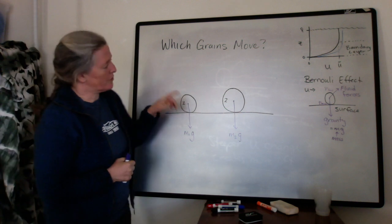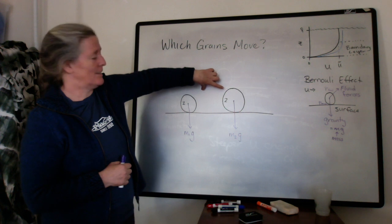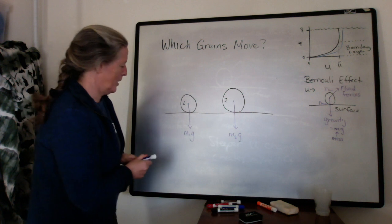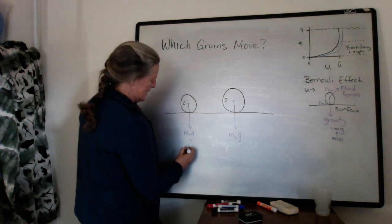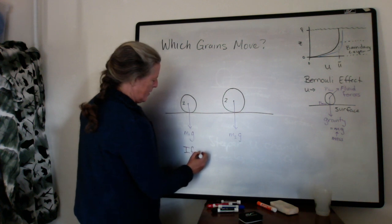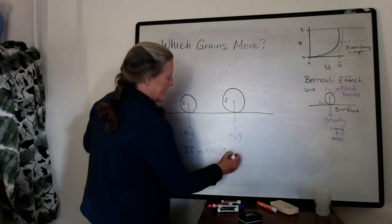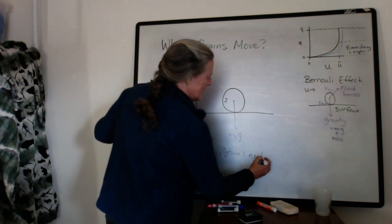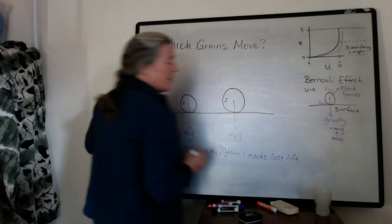And grain 2 has mass 2 times g for gravity for its downward force. So in terms of the lift force that's needed, if these two grains have the same density, this one's smaller, and so the mass would be smaller. So we can basically say, if m1 is less than m2, grain 1 needs less lift to get off the bed.